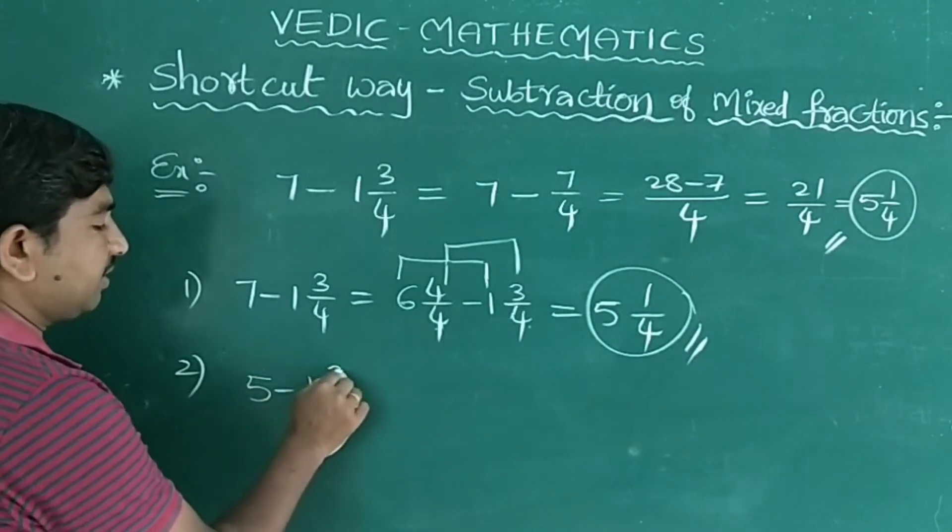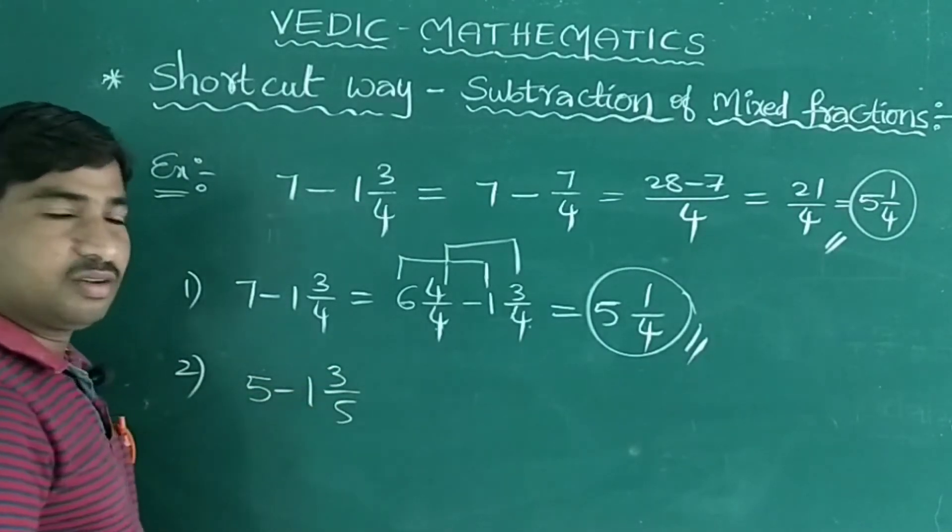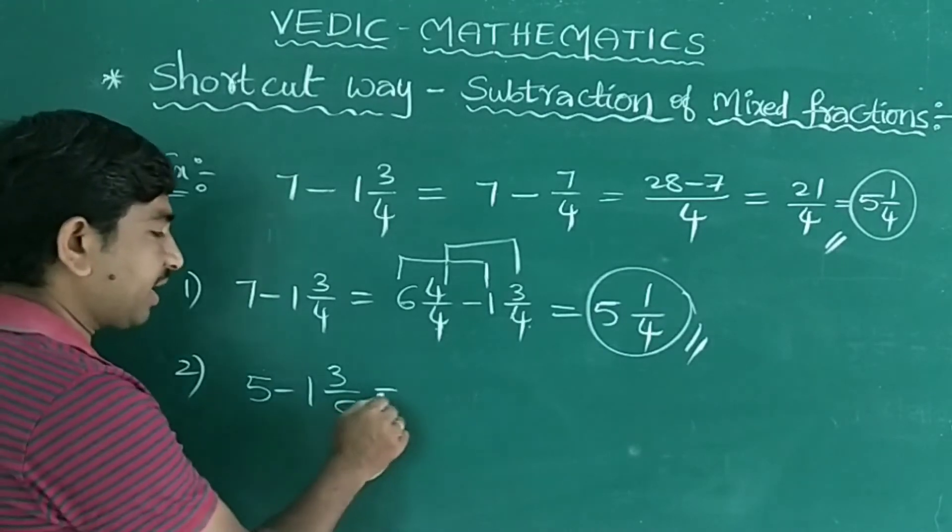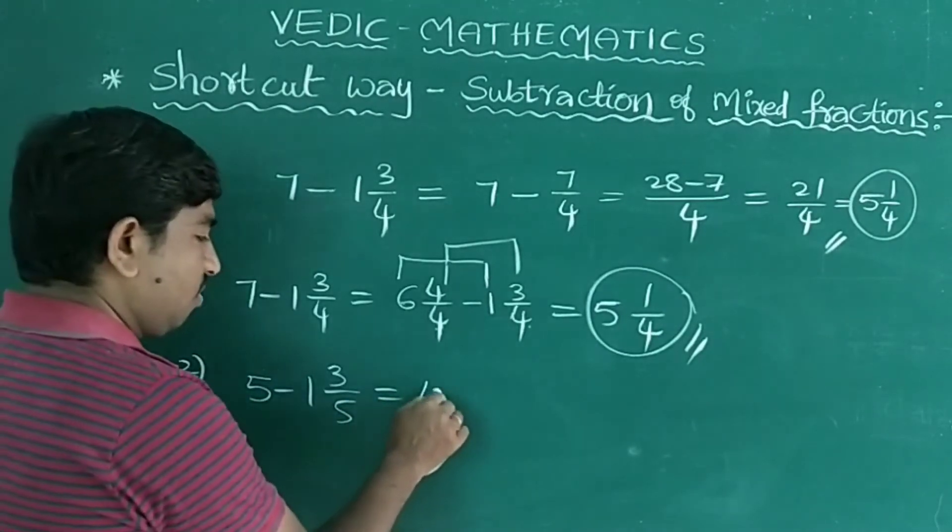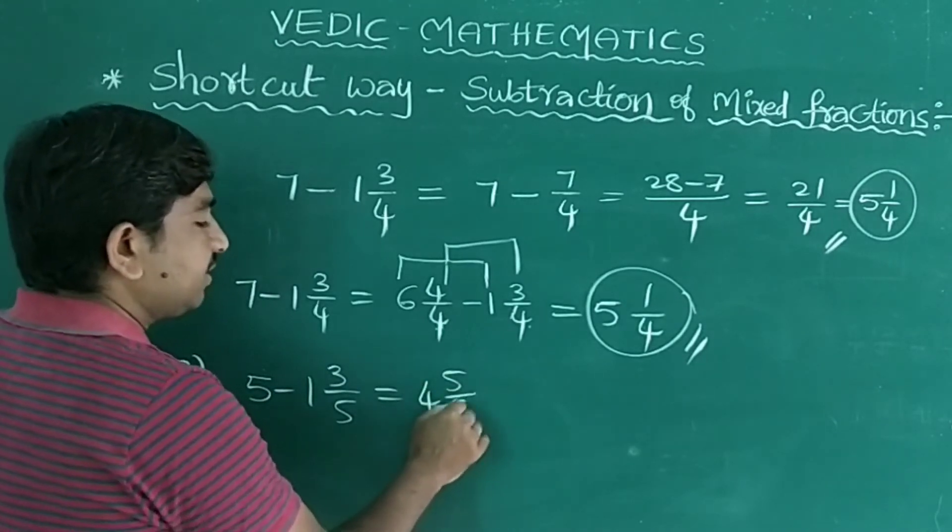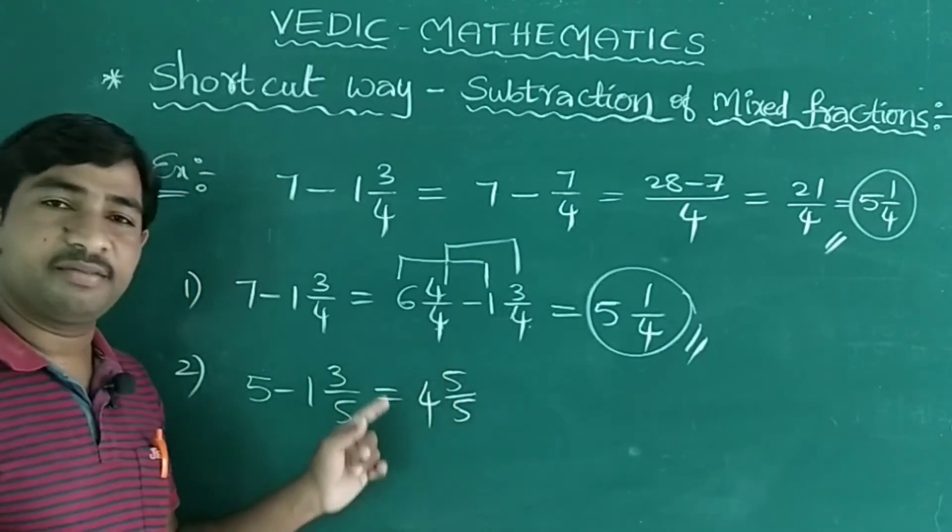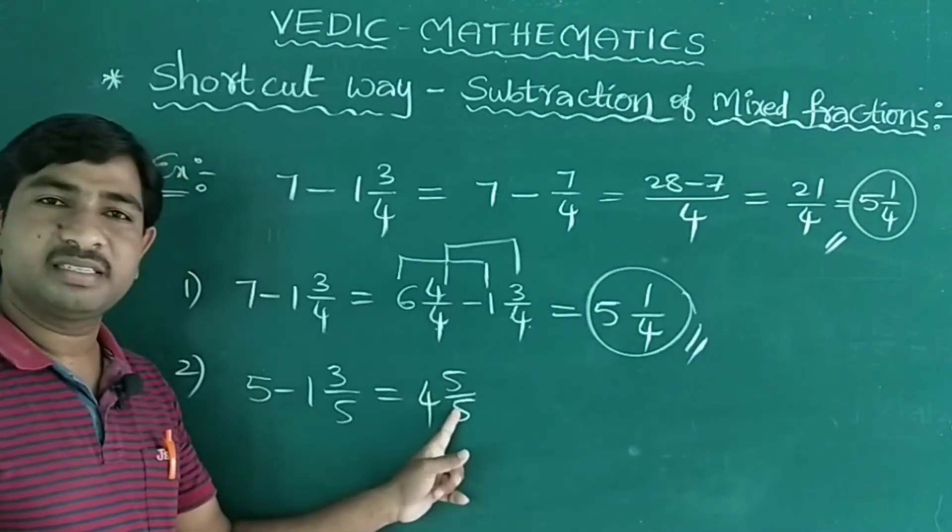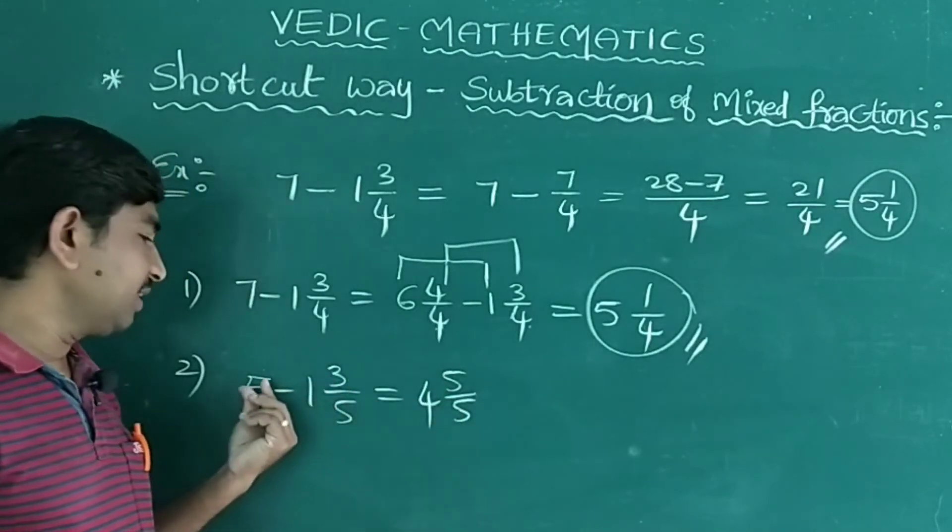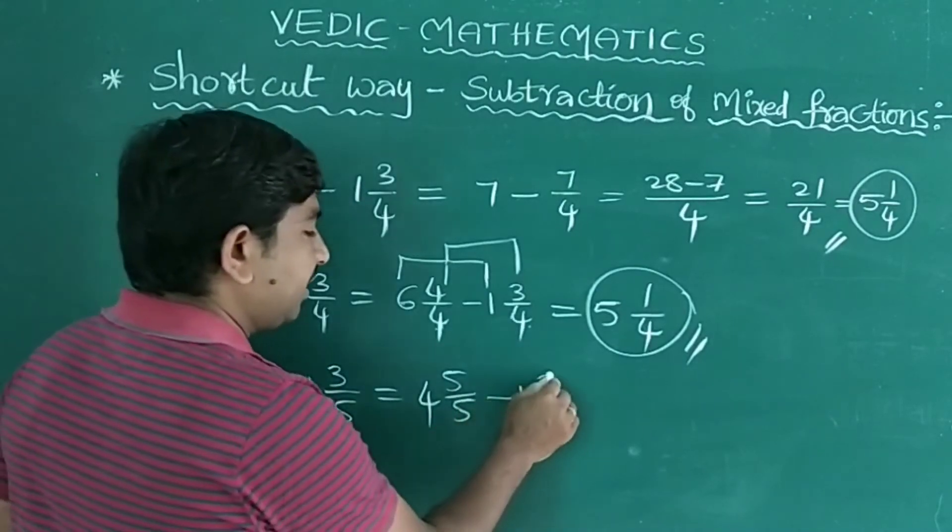See one more example problem. 5 minus 1 3/5. This 5 can be written as 4 5/5. See, observe, 4 5/5. 5 times 4 is 20, 20 plus 5 is 25. 25 by 5 means 5 only. Minus 1 3/5.